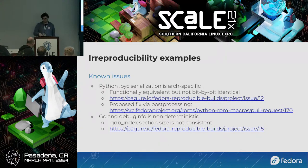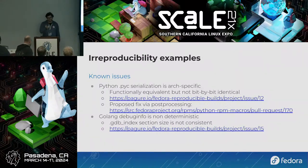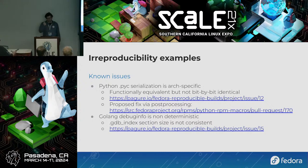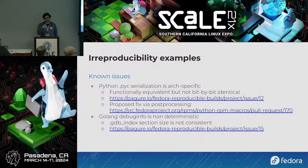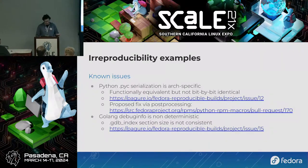Golang also has an issue: the detached debug symbols for Golang packages have sections that aren't deterministic. We don't yet know why and need to investigate. It's likely a bug but may turn out to be something more subtle.